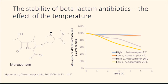Firstly, the antibiotic called meropenem, which has the beta-lactam ring, is known for its instability when the temperature is increased. Stability tests were conducted at two different temperatures. At plus 20 degrees in the autosampler, rapid degradation of meropenem occurred over a five-hour period, and only approximately 60% of meropenem was left in the sample. When the autosampler temperature was lowered to 4 degrees, the meropenem samples over the same time period were more stable.